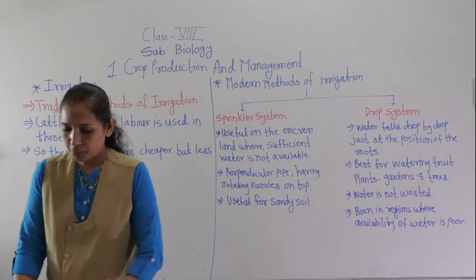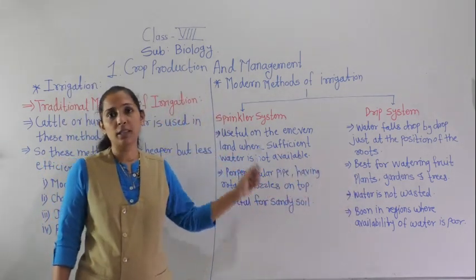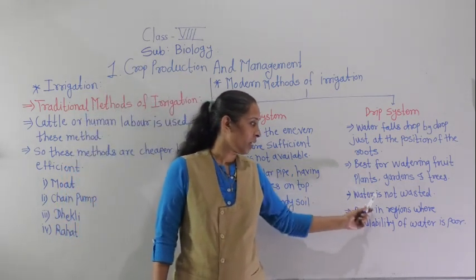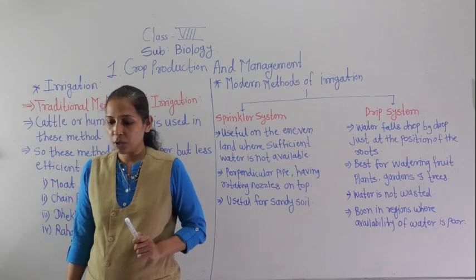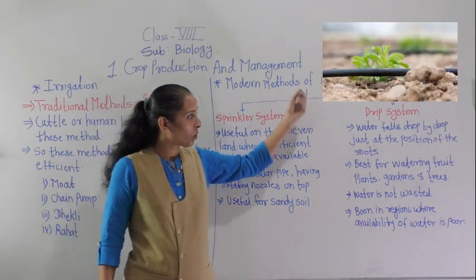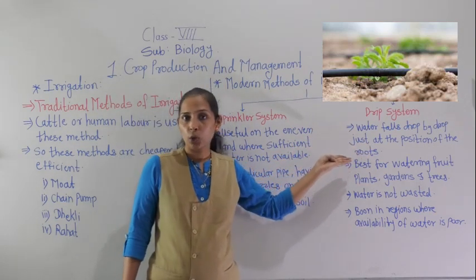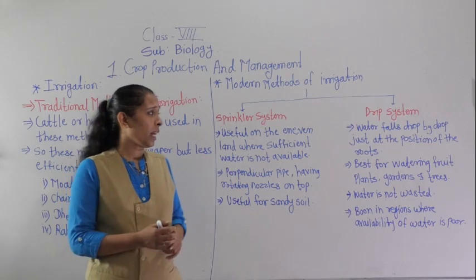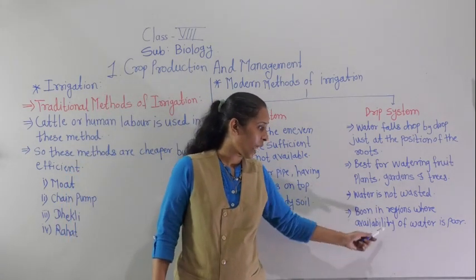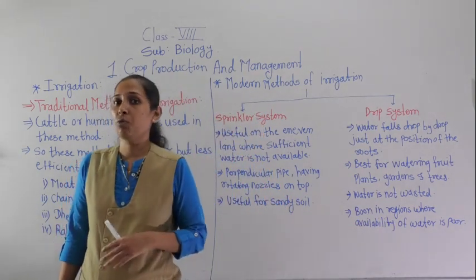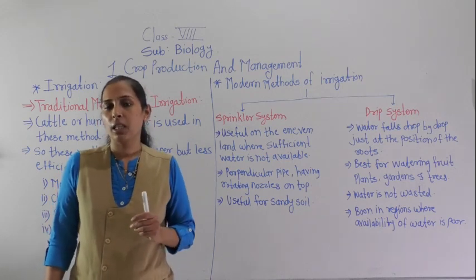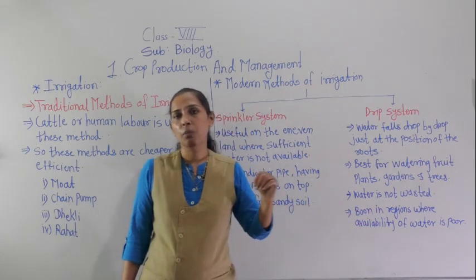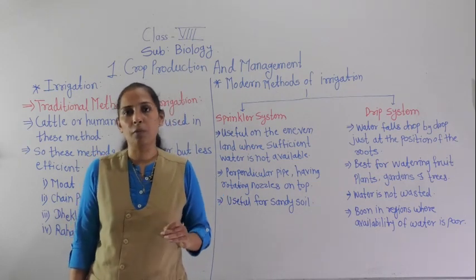In drip irrigation, there is no wastage of water because the drop-by-drop water falls just at the position of the roots, exactly where it is necessary. This drip irrigation system is very important in regions where the availability of water is poor or where there is a scarcity of water.